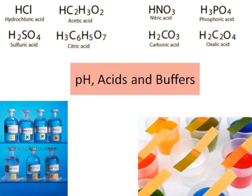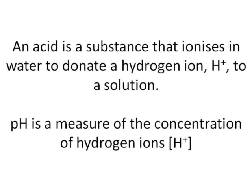Starting point is that an acid is a substance that ionizes in water to donate a hydrogen ion H+ to a solution. pH is thus a measure of the concentration of these hydrogen ions.